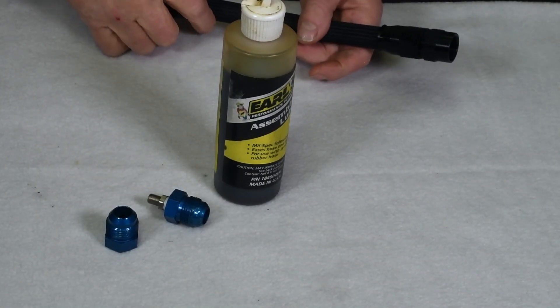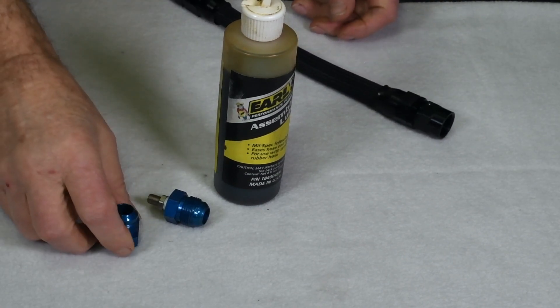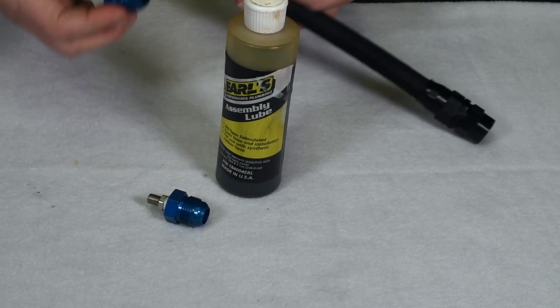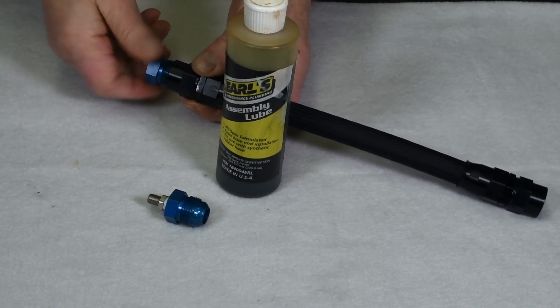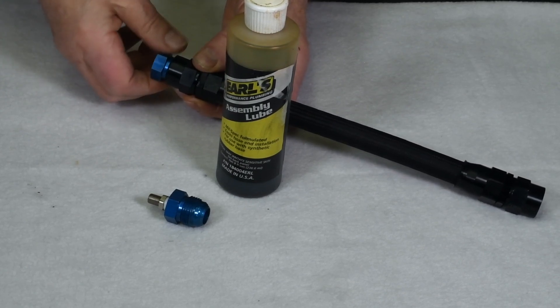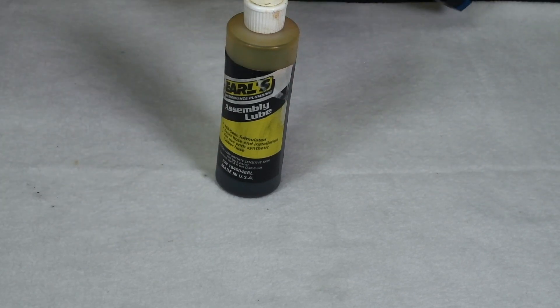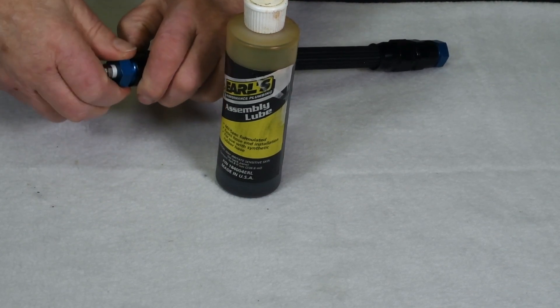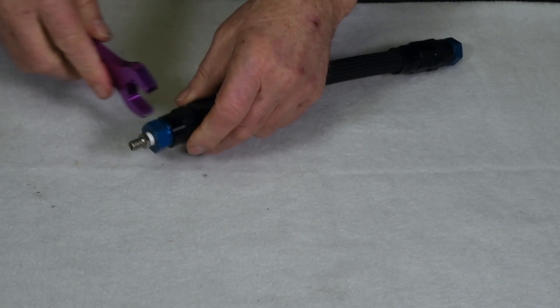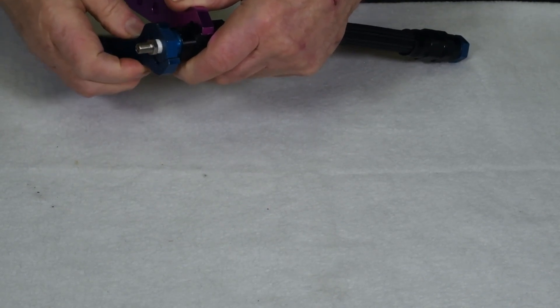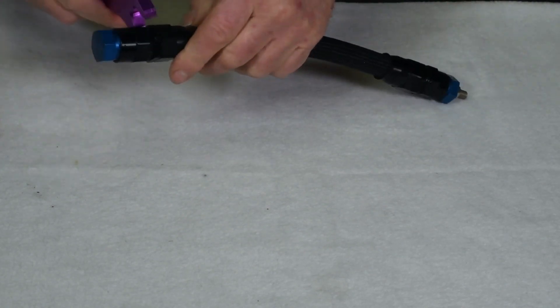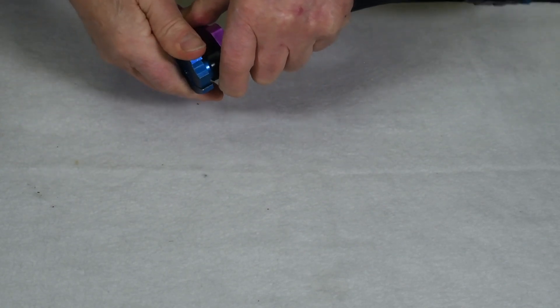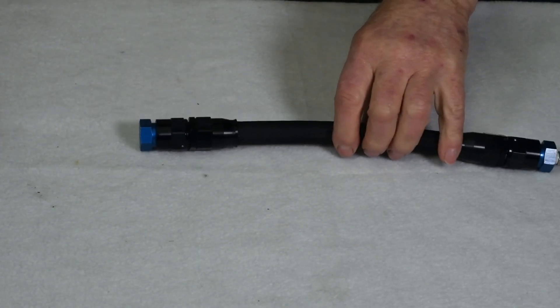Before I begin to test the hose, I lightly coat the male end of the cone fitting with a little bit of assembly lube. Just the cone end, both fittings. Turn them into the hose. Then you can tighten it with a set of AN wrenches. It doesn't have to be too tight.